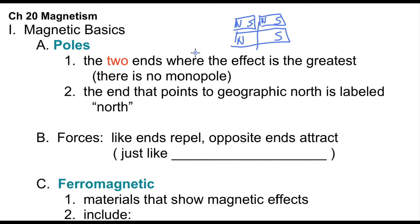There are always two ends, and we'll get to why later. The end that points to geographic north is labeled north — whichever end of a freely-moving magnet points toward the north pole is called north. We'll also discuss geographic north versus magnetic north.